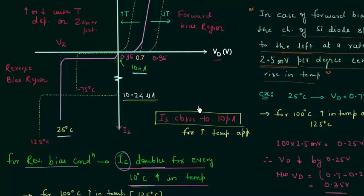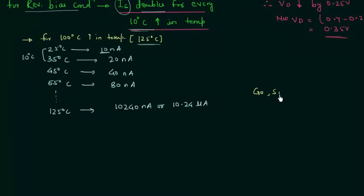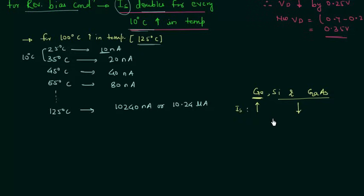Comparing germanium, silicon, and gallium arsenide: the reverse saturation current for germanium is high, while for silicon and gallium arsenide the reverse saturation current is smaller. The application of germanium is limited because of high reverse saturation current. Silicon is the most popular material for semiconductor diodes. That is all for this lecture; if you have any doubt you may ask in the comment section.